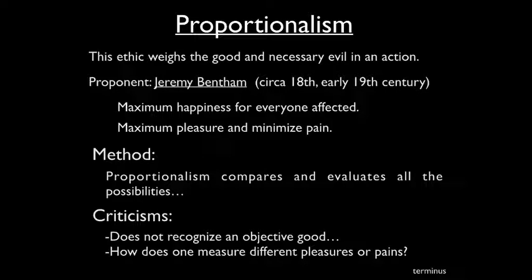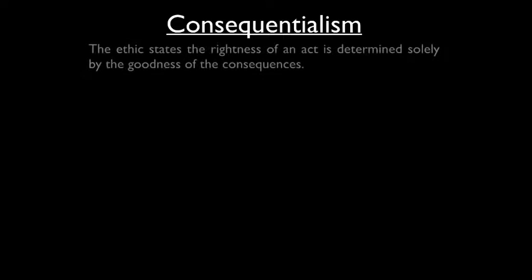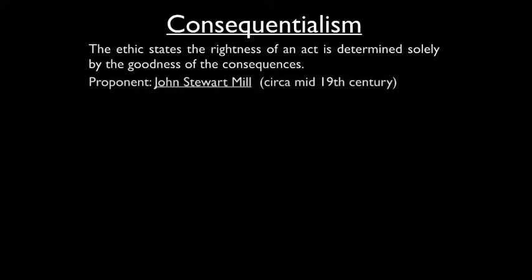In response to a student question: the method is proportioning all the possibilities available for that one particular moral act. The next system is consequentialism. These are often grouped together because they're both utilitarian ethics, but I'm offering them separately because there is some nuance between them.